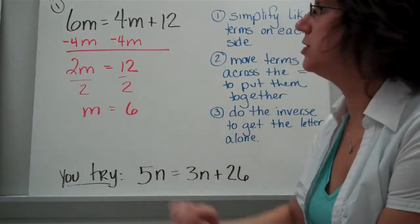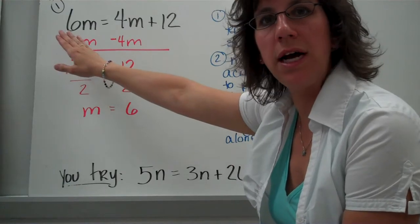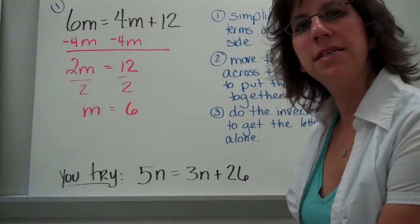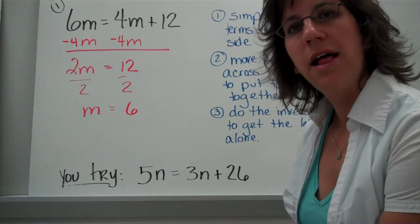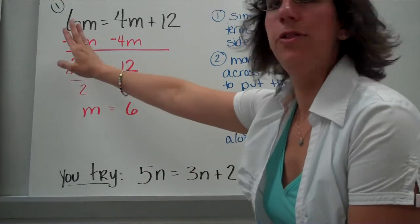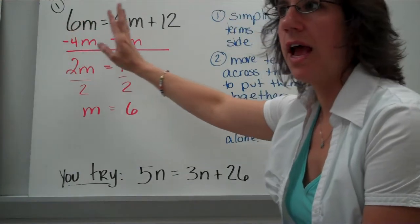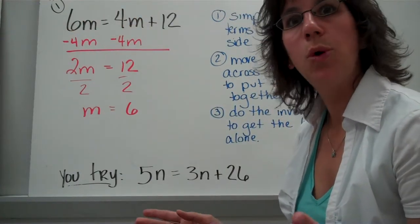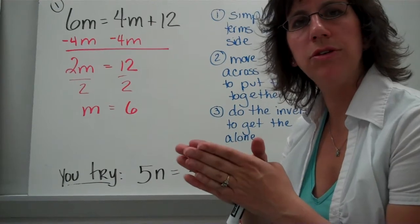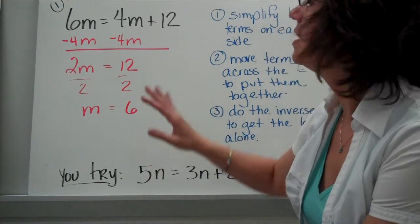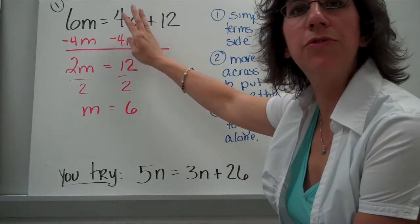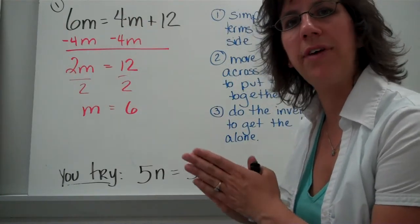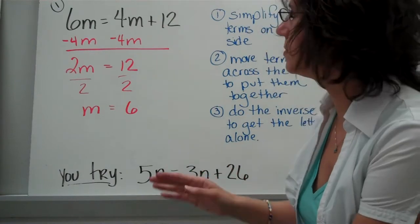Take a look at this first example. Do you notice how there's an M on the left and an M on the right? Remember the hands-on equations that we were doing in class? That's the same as having those pawns on the left and the pawns on the right. Remember how in hands-on equations we move them together to be on the same side of the equal sign? Same thing here. We're going to move the 4M to go on the other side of the equal sign — we want to put those M values together. Those are like terms.